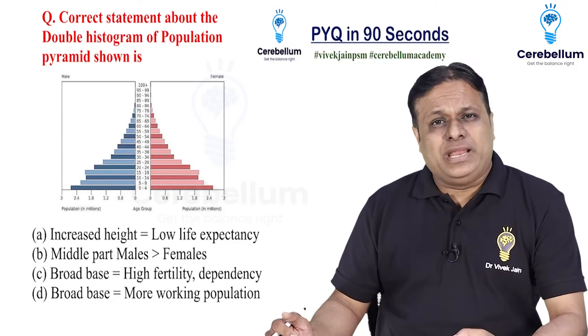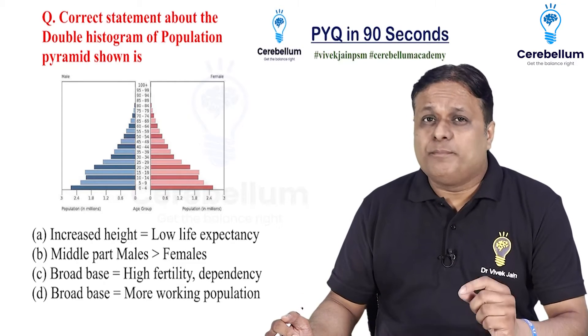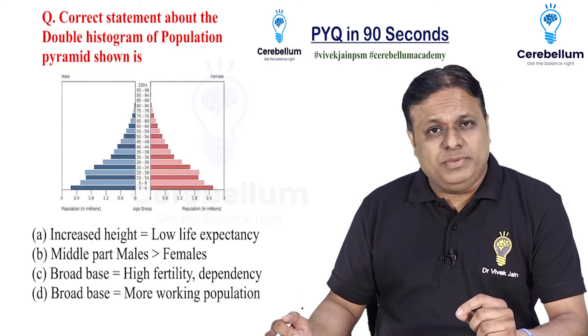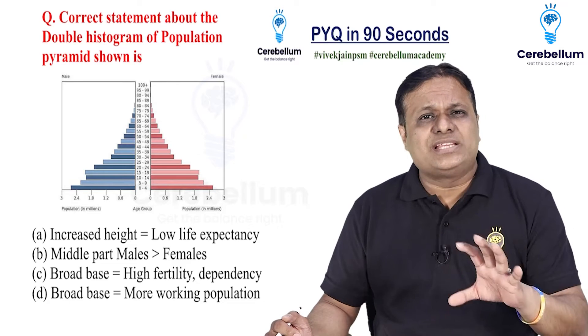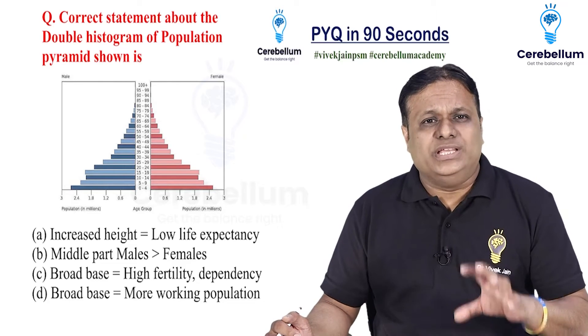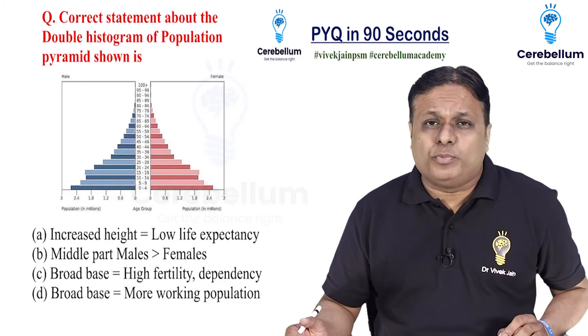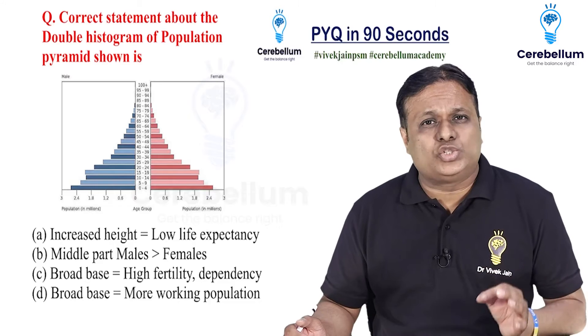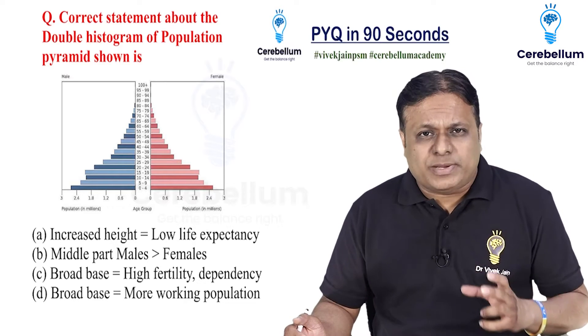Hello friends. Cerebellum PYQ in 90 seconds. PSM with me, Dr. Vivek Jan. The question asks: what is the correct statement about the double histogram of population pyramid shown? Friends, let's go choice by choice.